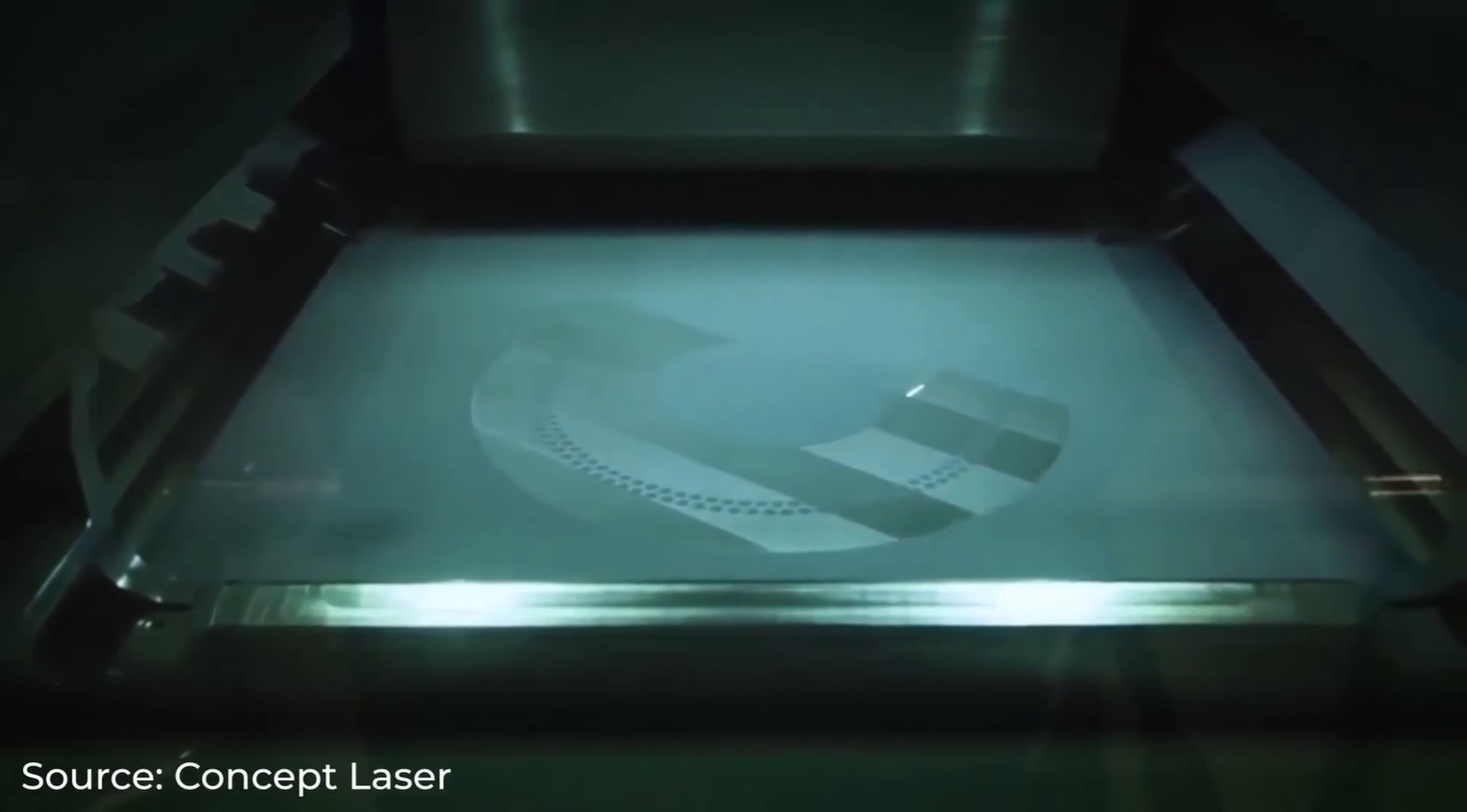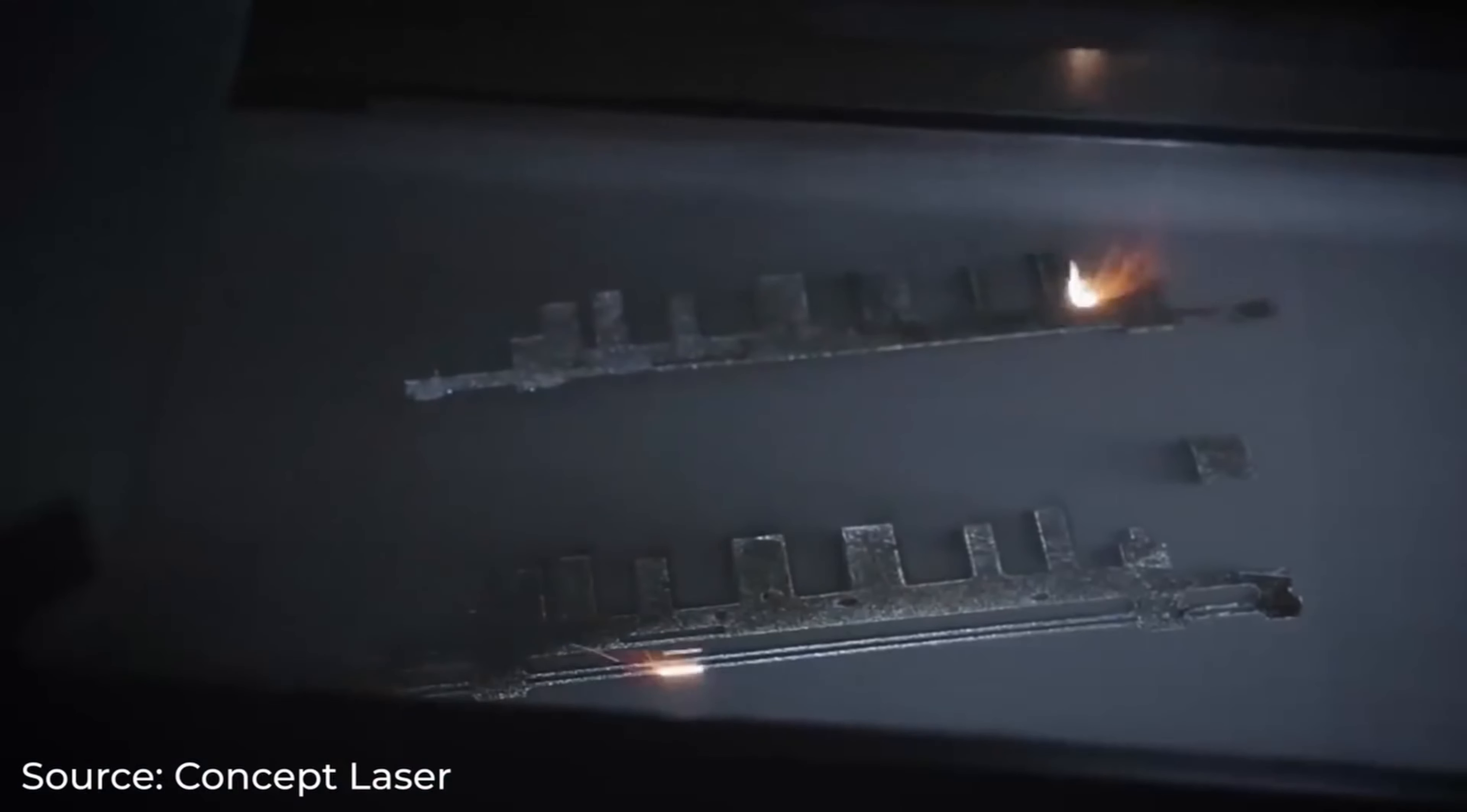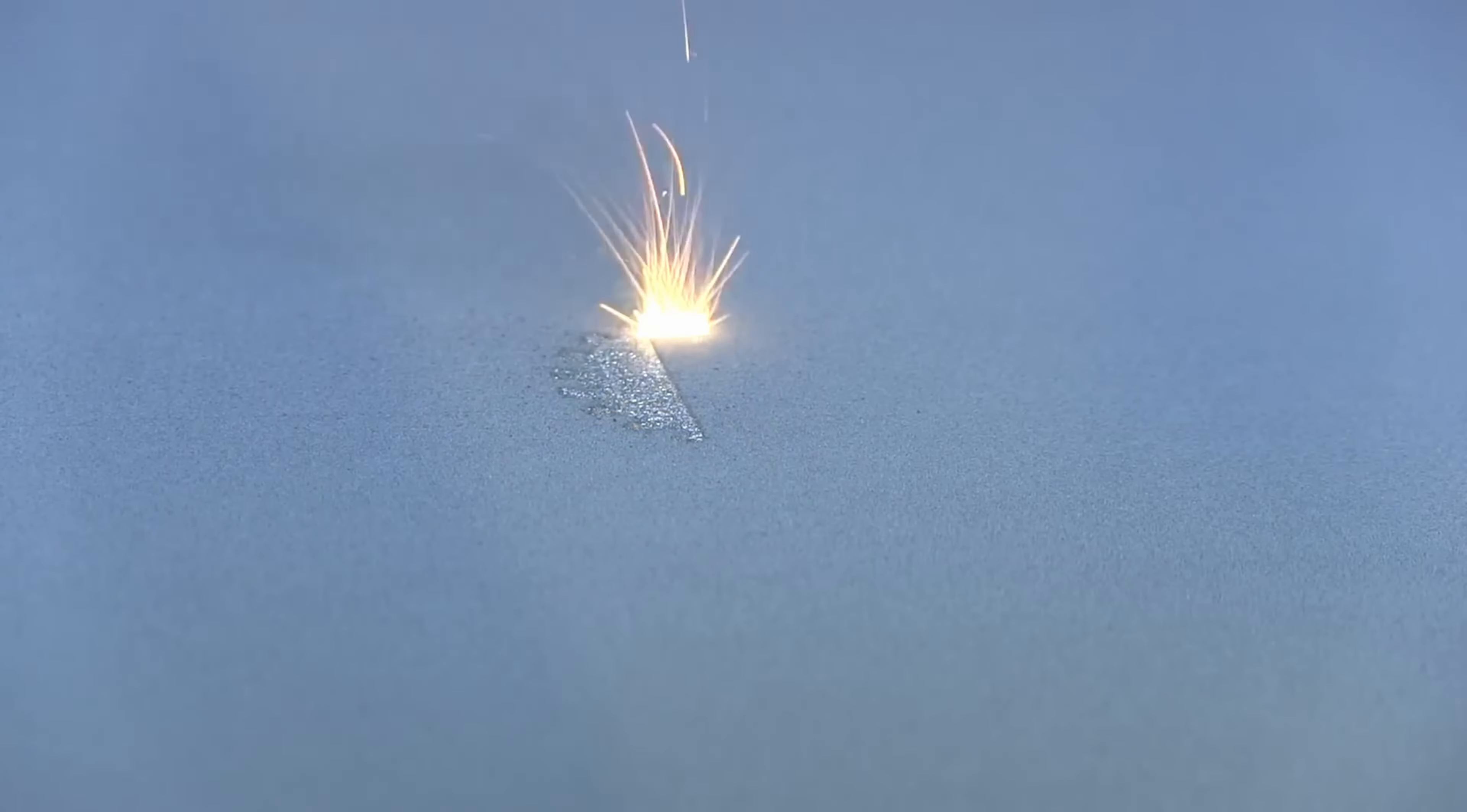The first step in the process is to attach the initial layer of metal to the build plate successfully. Subsequent layers are added one at a time until the 3D geometry is realized. The particulars of exactly how the metal is attached to the build plate and subsequently to previous layers of the build is where things get interesting and processes differ from one another.